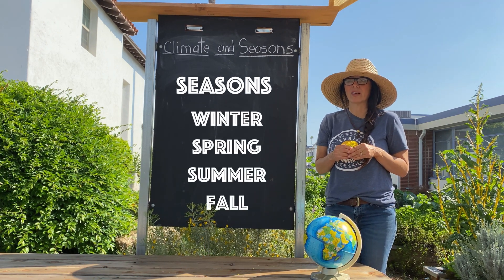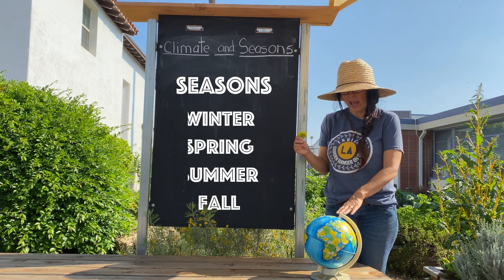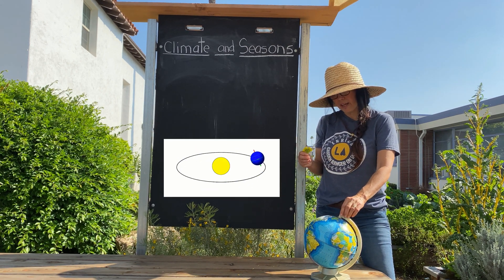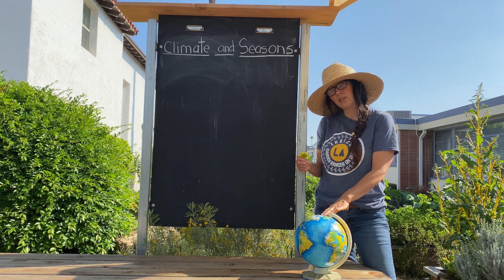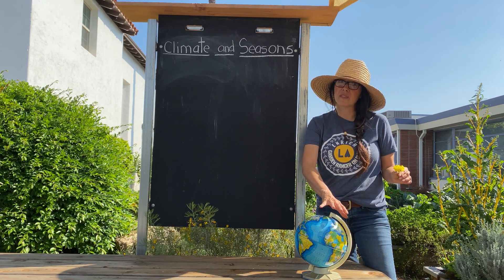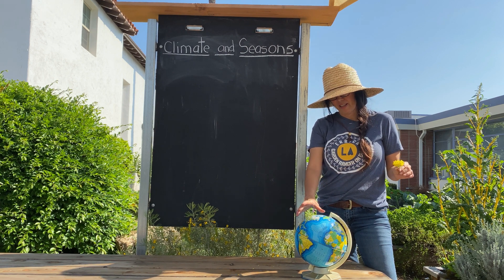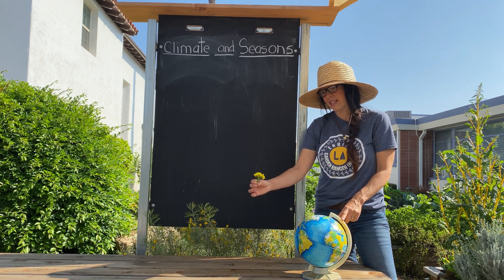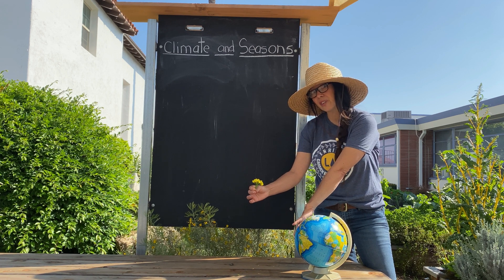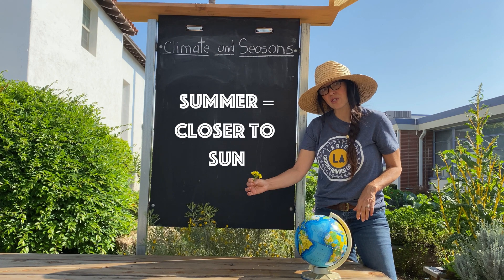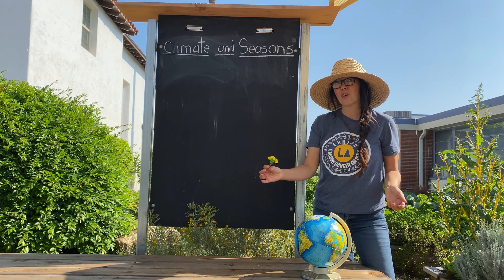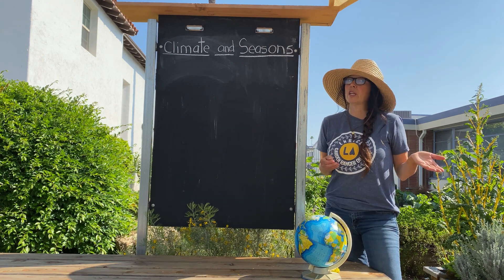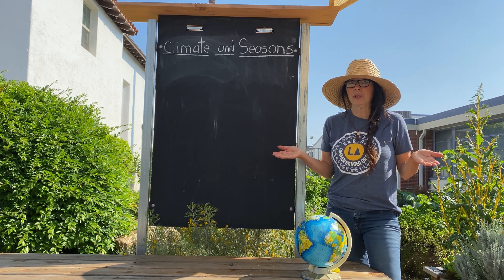Now let's talk about the seasons. Seasons are caused by how the Earth rotates around the Sun. As the Earth goes around the Sun, it is actually tilted slightly, as you can see on this globe. Since it is tilted, part of the hemisphere is closer to the Sun than the other half. Wherever the Sun is closest to, that would make it summer. Winter happens in that area where the Earth is actually tilted away from the Sun, so winter and summer are completely opposite of each other.